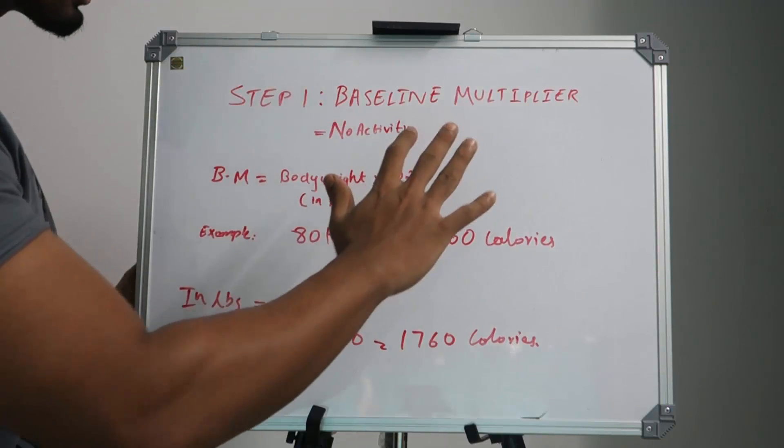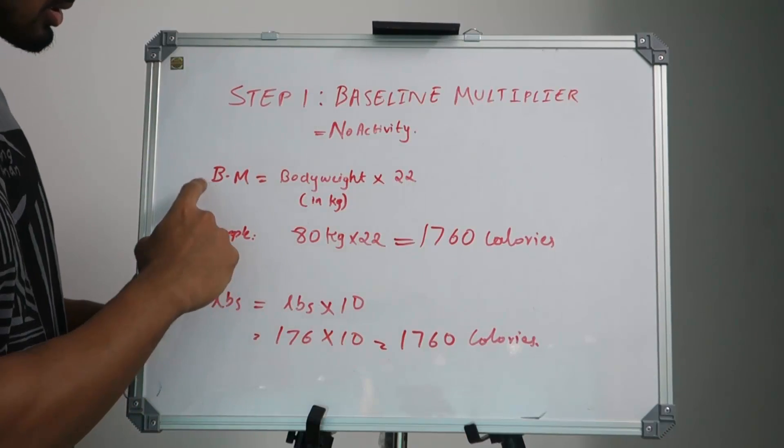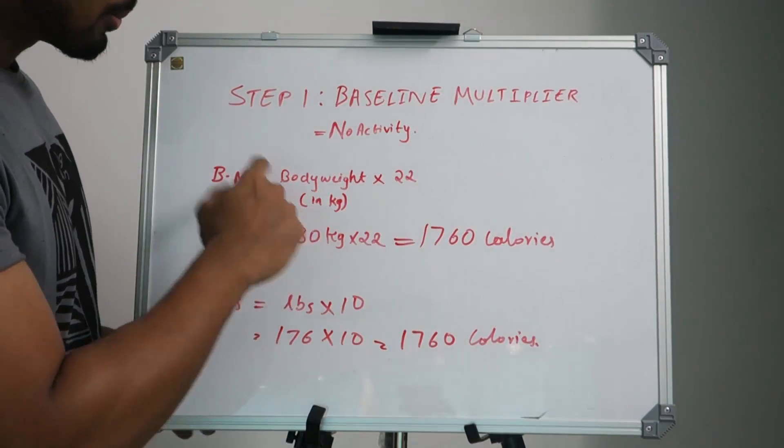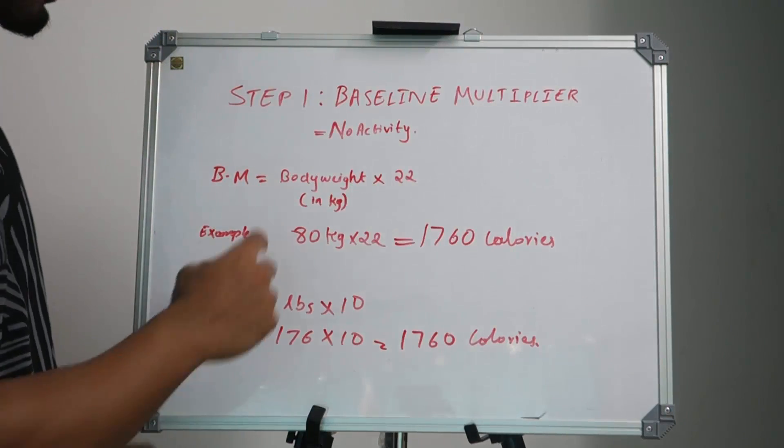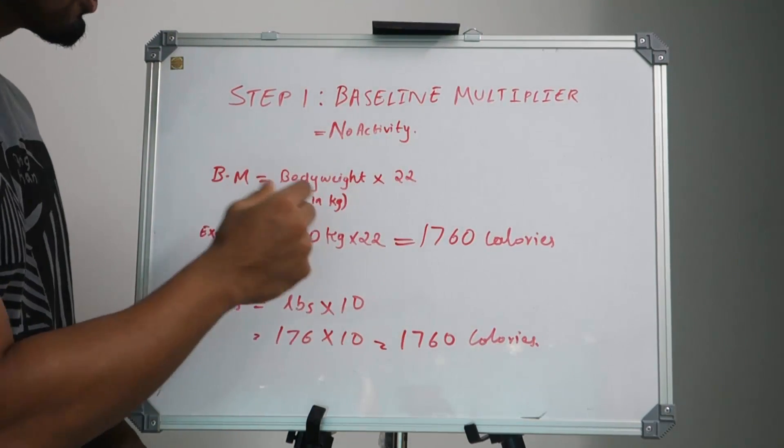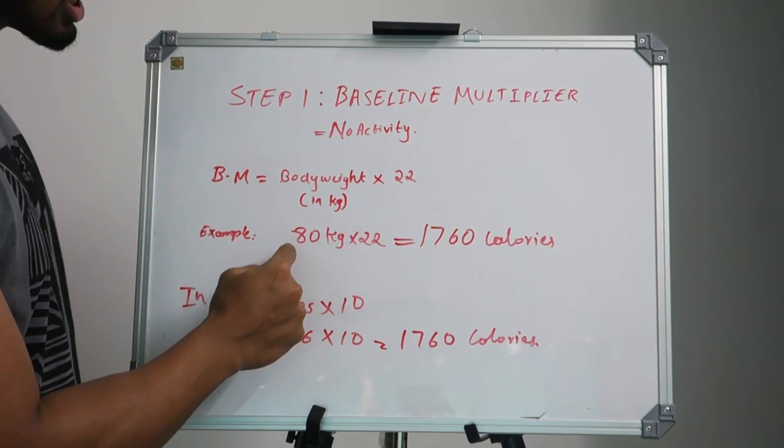Checking out your baseline multiplier is very easy. All you need to do is baseline multiplier equals body weight times 22. We will consider kg here because in India we use kgs. If your weight is 80 kgs or 90 kgs, just multiply your kgs by 22.